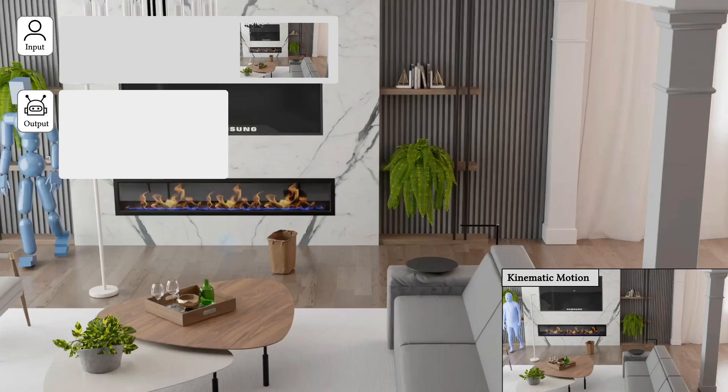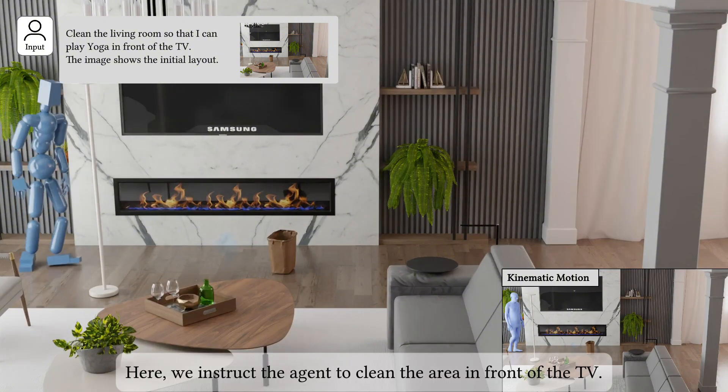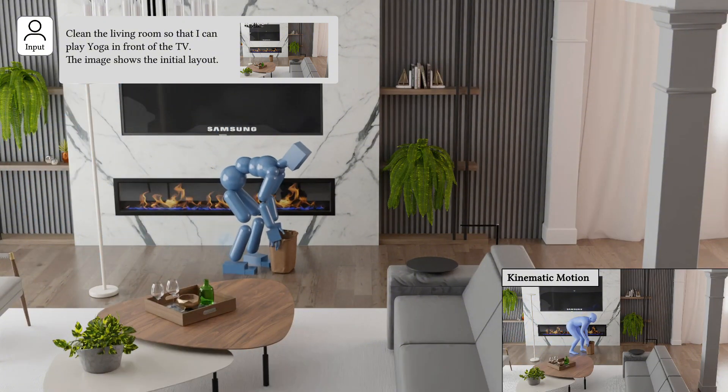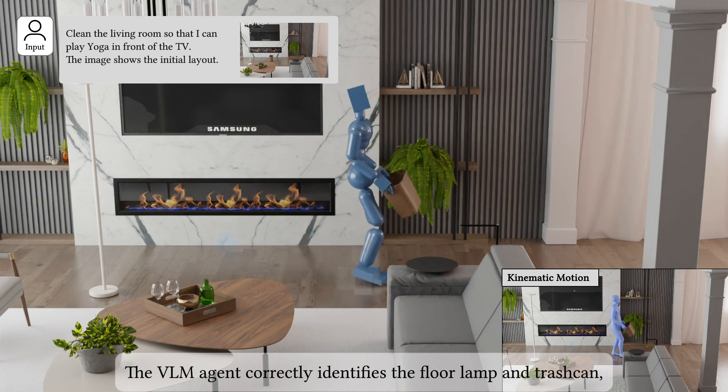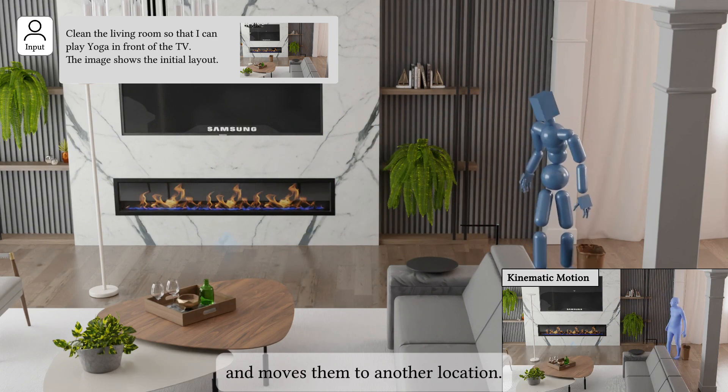Next, we present some results of long sequence generation using our system. Here, we instruct the agent to clean the area in front of the TV. The VLM agent correctly identifies the floor lamp and trash can, which occupy the space in front of the TV, and moves them to another location.